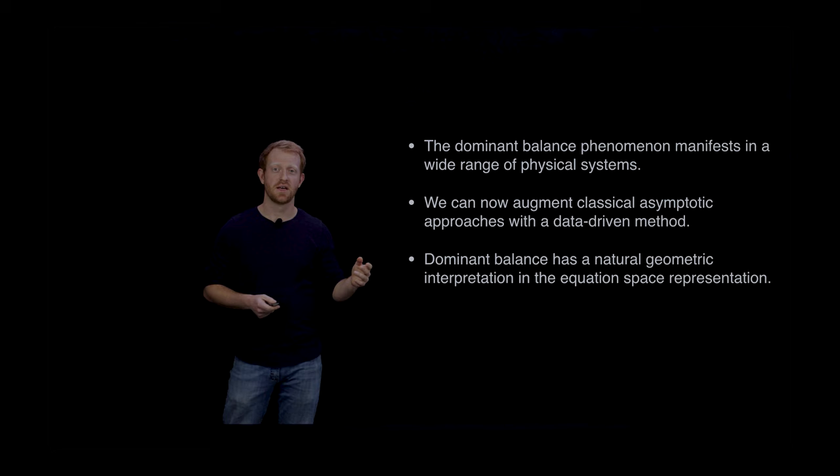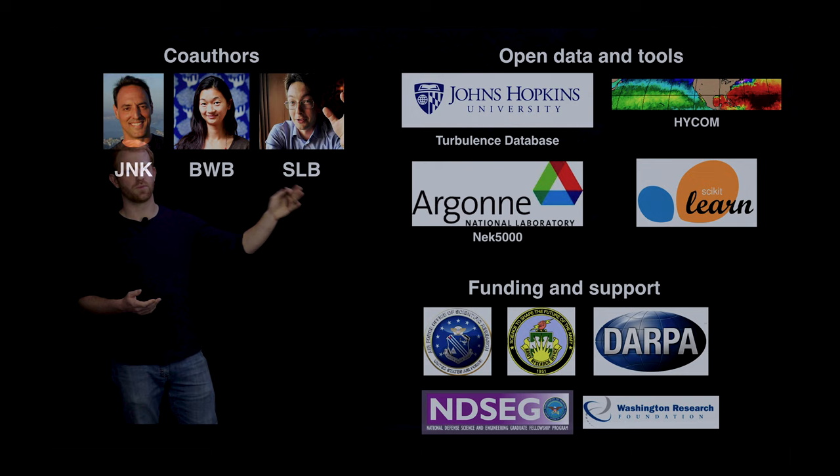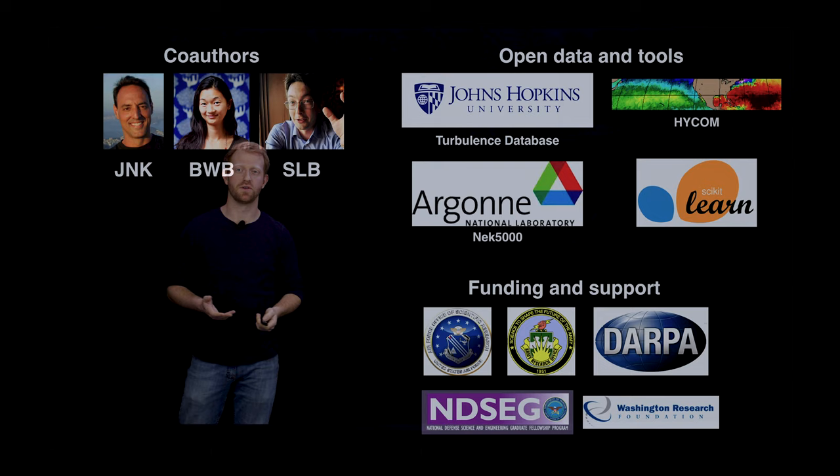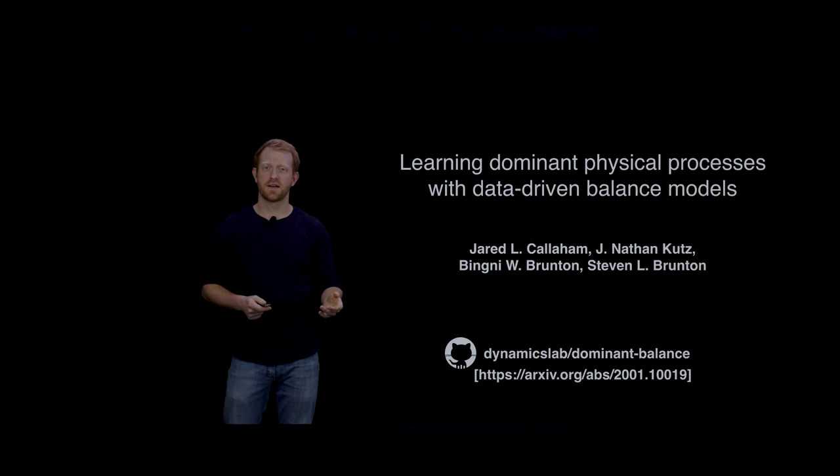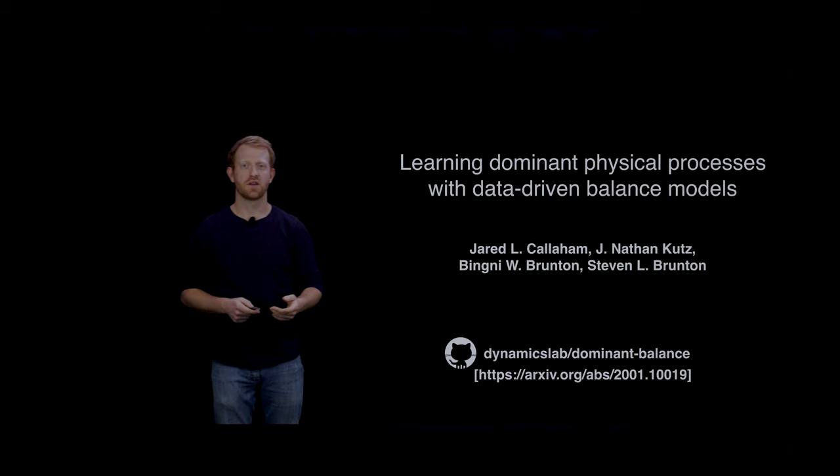The key idea here is the equation space representation—this geometric perspective on dominant balance lets us use very simple off-the-shelf machine learning methods to identify the dominant local physics. I'd like to acknowledge our supporters and everyone who worked on the open data sets and tools that we use to do this analysis. There's much more detail available in the links including the classic analysis, details on the method including hyperparameter tuning, uncertainty analysis for assignment to a balance relation, and Jupyter notebooks to reproduce all of the results. Thanks for checking this out and I hope this turns out to be useful for you.